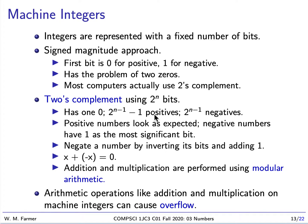Welcome back to McMaster University course, Computer Science 1JC3 Introduction to Computational Thinking. We will continue today with the topic of numbers, and specifically we're going to talk about machine integers.